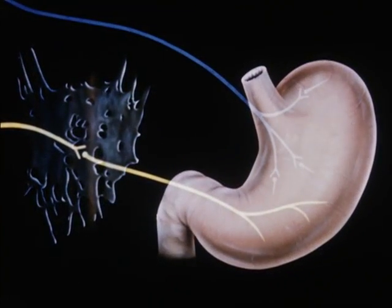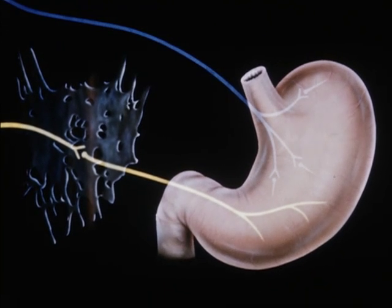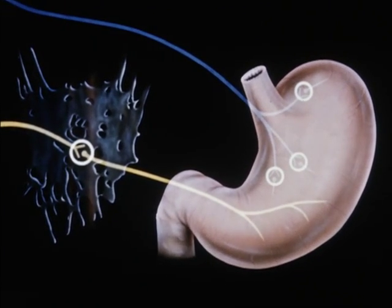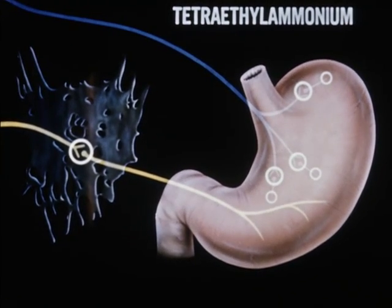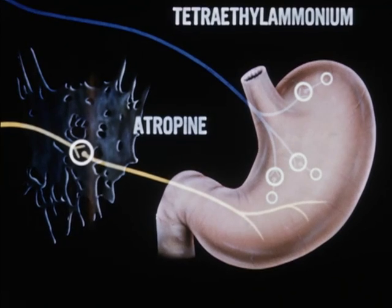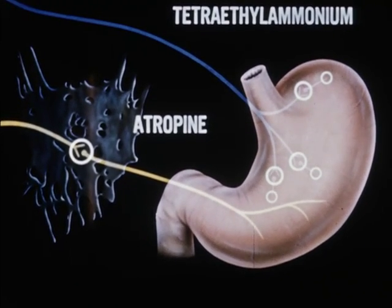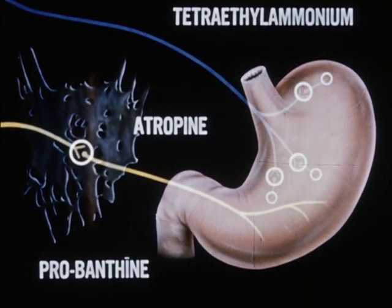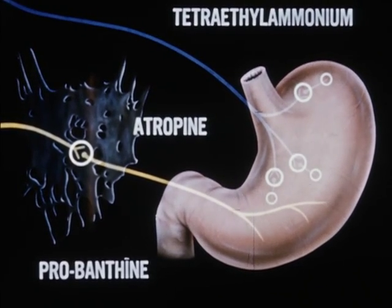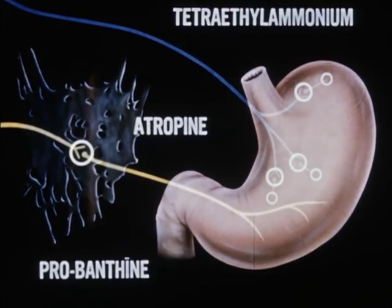The newer drugs which act in therapeutic doses to inhibit neural transmission at the ganglia of both subdivisions, as does tetraethylammonium, and which also inhibit at the effectors of the parasympathetic subdivision, as does atropine, allow a considerable therapeutic advantage over previously available blocking agents. One of these is propantheline bromide, more commonly known as probanthine. It has relatively little action on the normal cardiovascular system, which advantage has increased its sphere of practical application.